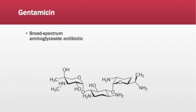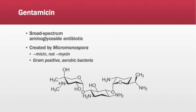Gentamicin is a broad-spectrum antibiotic used to treat bacterial infections. It is created by the genus of bacteria called Micromonospora — gram-positive, aerobic bacteria that efflux this organic compound in an act of self-defense against encroaching gram-negative bacteria. In contrast to antibiotics derived from the Streptomyces genus, which carry the suffix '-mycin' with a y, the antibiotics derived from Micromonospora carry the suffix '-micin' with an i.